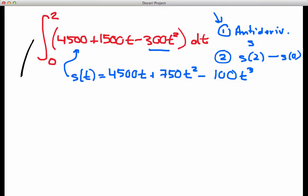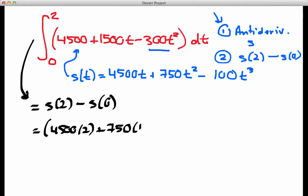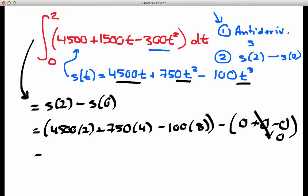So now we're all set up to calculate this integral. Let's do that right here. So this is going to be equal to, I'm going to take my s(t) and put in s(2), or calculate s(2), and then calculate s(0) and subtract. s(2) is going to be simply 4,500 times 2 plus 750 times 2², which is 4, minus 100 times 2³, which is 8. Now I'm going to subtract off s(0). But notice in s, every term in s(t) has a t on it, so this is going to be 0 plus 0 minus 0. Of course, the whole thing is going to go to 0. And now it's just arithmetic from here on out. This is 9,000, 2 times 4,500 plus 3,000, which is 750 times 4, minus 800. And you do the math on this and you get 11,200.